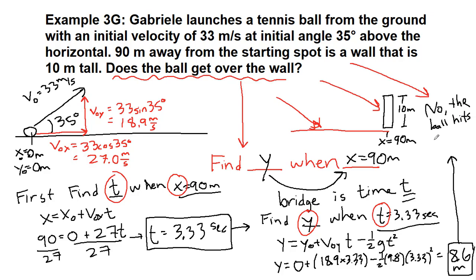Ball hits the wall at a height of 8.6 meters. So it was close, but it did not make it. That would be our final answer.